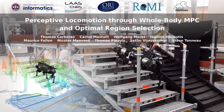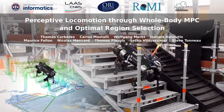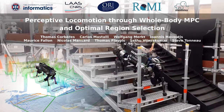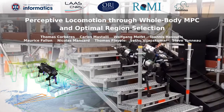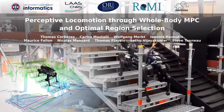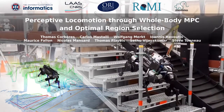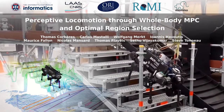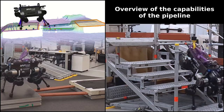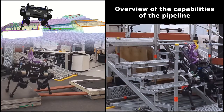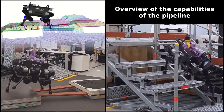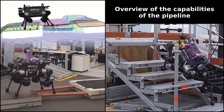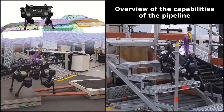In this video, we present a perceptive locomotion pipeline composed of a raw body model predictive controller and a mixed integer footstep generator. We focus on local monitoring of the environment and motion generation encountered in autonomous legged navigation.